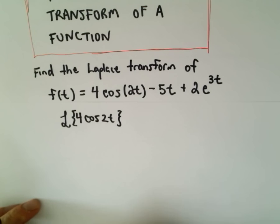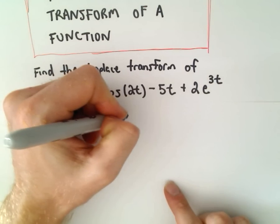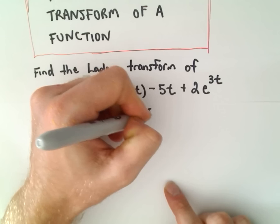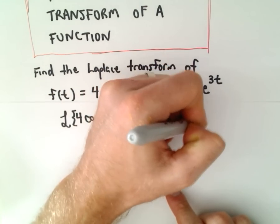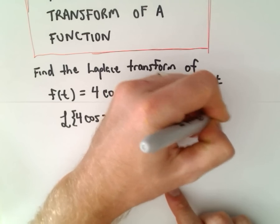Remember the Laplace transform is linear so we can break all this up minus the Laplace transform of 5t plus the Laplace transform of 2e to the 3t.